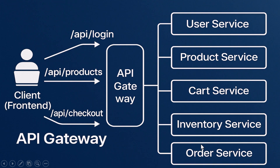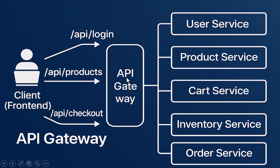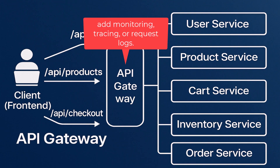If something changes behind the scenes — like the order service gets a new version or the payment service moves to another port — the client doesn't need to care; the gateway handles it all. Another key benefit of the API gateway pattern is security. Since all external traffic passes through a single point, you can enforce consistent authentication and authorization, add SSL termination, token validation, and IP whitelisting, all without writing that logic in every service. And because the gateway sees all traffic, it's the perfect place to add monitoring, tracing, or request logs.